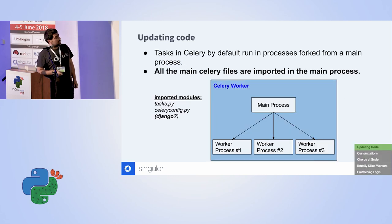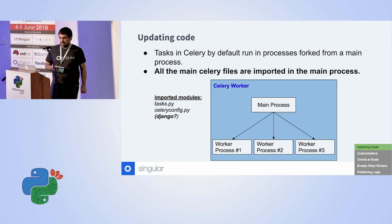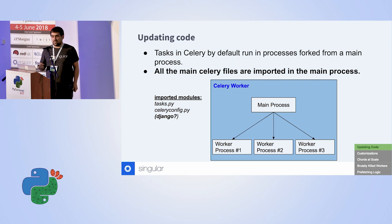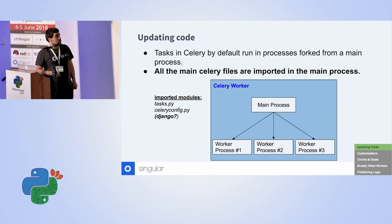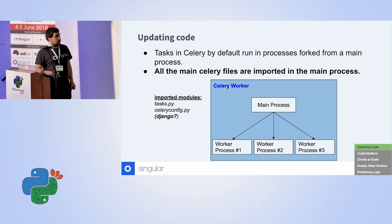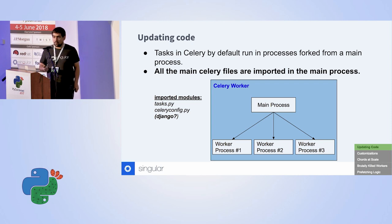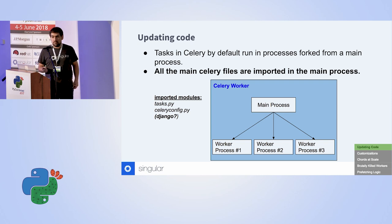So updating code. In order to understand the problem we need to understand how workers operate. In the default setting, you have a main process and then sub-processes that are spawned (forked) from it. It's kind of a library that wraps multiprocessing. One of the most interesting things is where your code is actually imported. If something is imported in the main process, then it will be in each forked process until the worker is restarted. We quickly understood that our task definitions are imported in the main process, as well as the configuration, and if you use a Django backend then Django itself and all the models code.